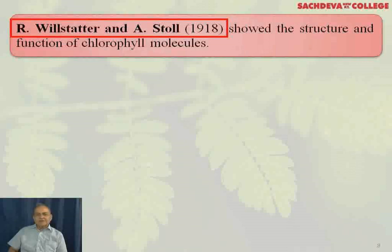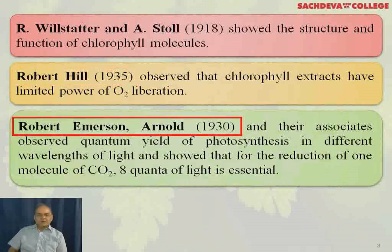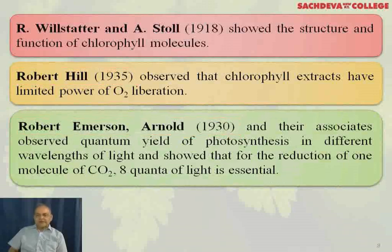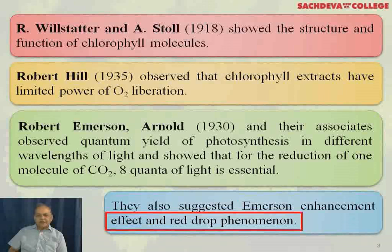R. Willstätter and A. Stoll, in 1918, showed the structure and function of chlorophyll molecules. Robert Hill, in 1935, observed that chlorophyll extracts have limited power of O2 liberation. Robert Emerson and Arnold, in 1930, and their associates observed the quantum yield of photosynthesis at different wavelengths of light and showed that for the reduction of one molecule of CO2, each quantum of light is essential. They also suggested the Emerson enhancement effect and red drop phenomena.